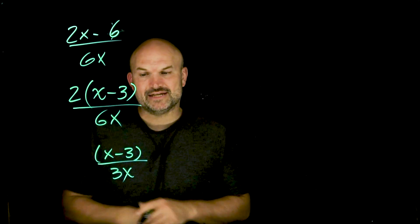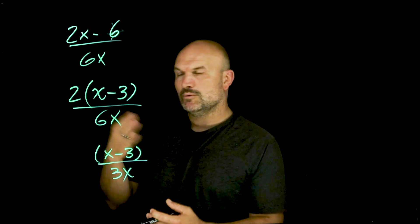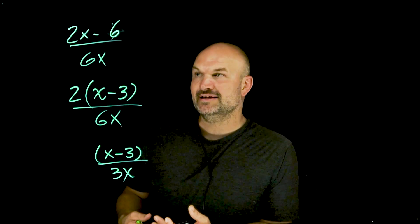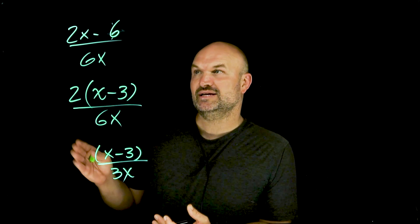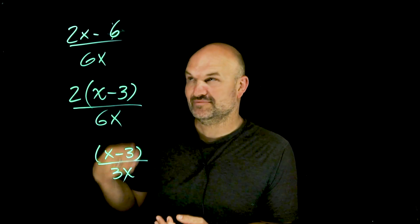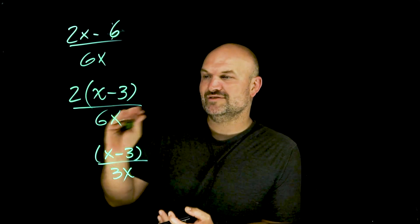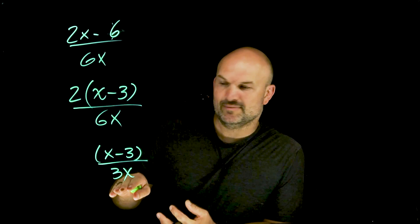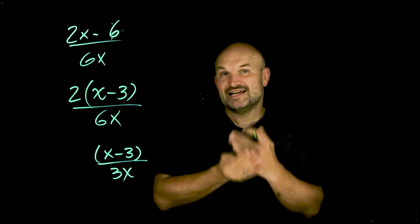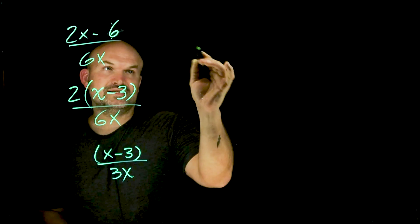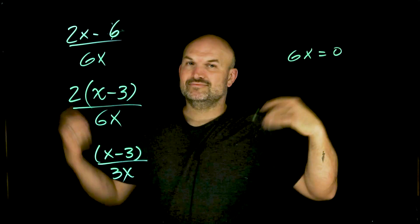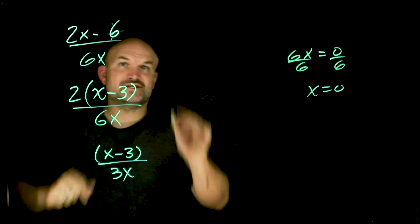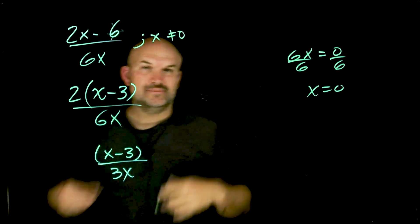However, now we need to determine what our undefined values are. When looking for undefined values, we can go back to our original expression — because even when things get divided out, they can still represent values that are not defined. What we want to determine are the values that make the denominator equal to zero. We go back to the original denominator: 6X equals zero, so X equals zero. In this original equation, X cannot equal zero because you can't divide by zero.